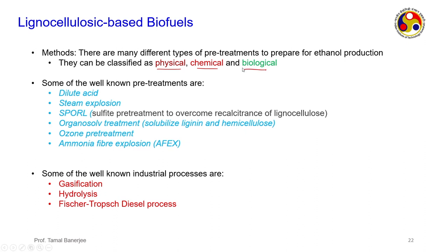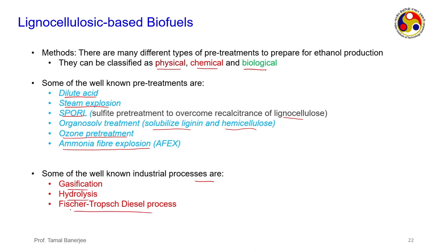Pretreatment methods include physical, chemical, and biological approaches. Well-known methods include dilute acid, steam explosion, SPORL (sulfite pretreatment to overcome recalcitrance of lignocellulose), organosolv treatment which solubilizes lignin and hemicellulose, ozone treatment, and ammonia fiber explosion — where ammonia at high pressure is exploded to form a gaseous part and a solid part. Industrial processes include gasification, hydrolysis, and Fischer-Tropsch diesel. All these methods try to reduce the crystallinity of cellulose or alter polarity to increase amorphosity.